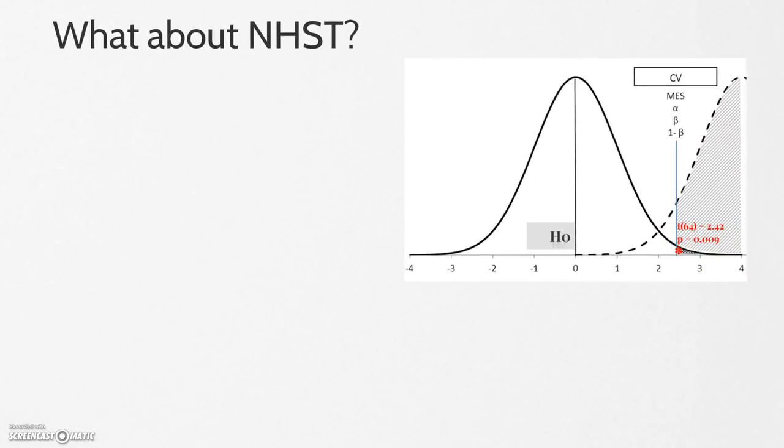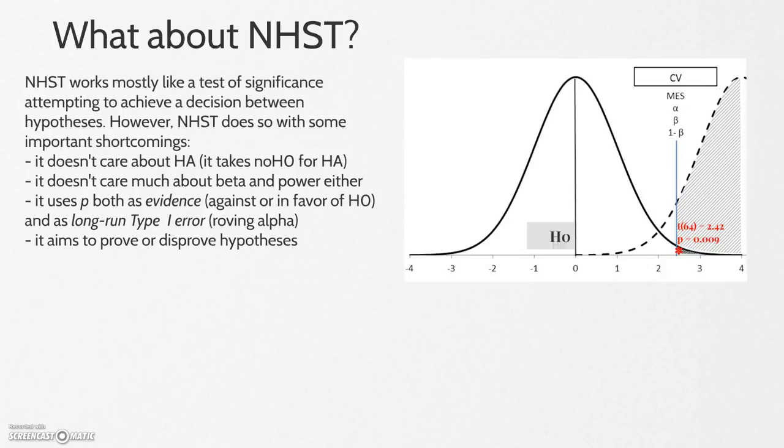What about NHST, you may ask as well? Well, what about it? NHST works mostly like a test of significance attempting to achieve a decision between hypotheses. However, NHST does so with some important shortcomings. It doesn't care about the alternative hypothesis, actually takes the negation of the null hypothesis for the alternative hypothesis. It doesn't care much about beta and power either.